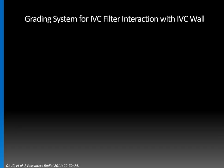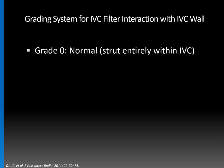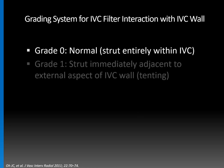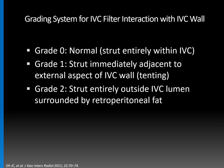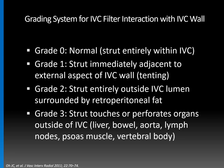A study describing the grading system for IVC filter interaction with the IVC wall proposed this system. Grade zero is normal when the struts are entirely in the IVC. Grade one is when there is a strut immediately adjacent to the external aspect of the IVC wall — that's when you have the struts tenting the wall. Grade two is when the strut is entirely outside the IVC lumen, surrounded by retroperitoneal fat. Grade three is when the strut touches or perforates organs outside of the IVC — that could be liver, bowel, aorta, lymph nodes, psoas muscle, or vertebral body like in this case. In that study, they found it was not uncommon to see some degree of IVC filter tenting or perforation, and that these filters could still be removed safely.